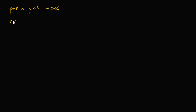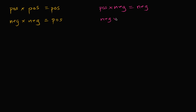But it was also true that if you had the same sign — a negative times a negative — that was also going to be equal to a positive number. And the way that you get a negative number is if you multiply or divide something of different signs. So a positive times a negative gives you a negative, or a negative times a positive also gives you a negative. I wrote it for multiplication, but it also applies to division.